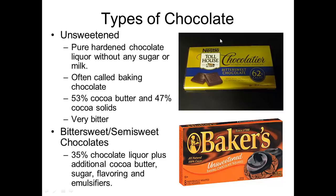The next type of chocolate is bittersweet or semi-sweet chocolate. You can buy this in chips, chunks, etc., but it's also often used for baking. It has 35% chocolate liqueur, but it has additional cocoa butter and sugar and some other flavoring, so it's going to be a little bit more tasty to your palate.